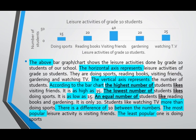According to the bar chart, the highest number of students likes visiting friends. It is as high as 35. The lowest number of students likes doing sports. It is as low as 15. An equal number of students like reading books and gardening. It is only 20.